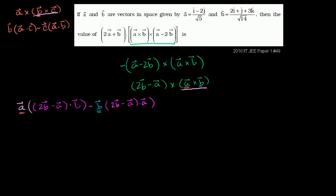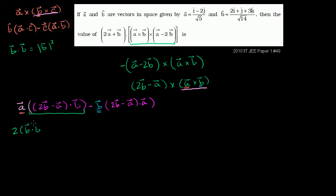Let's simplify the expressions in parentheses using the distributive property. The first dot product (2b − a)·b expands to 2(b·b) − (a·b). The second dot product (2b − a)·a expands to 2(b·a) − (a·a), or equivalently 2(a·b) − (a·a). All of this is times the respective vectors a and b.